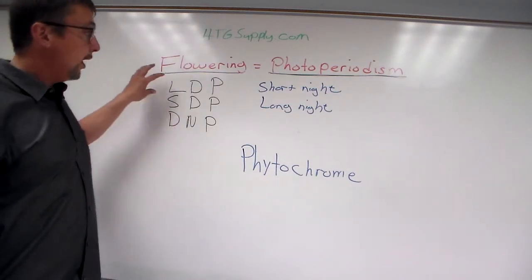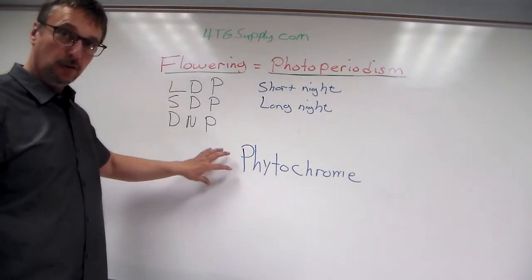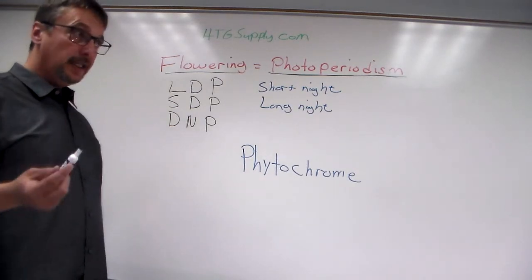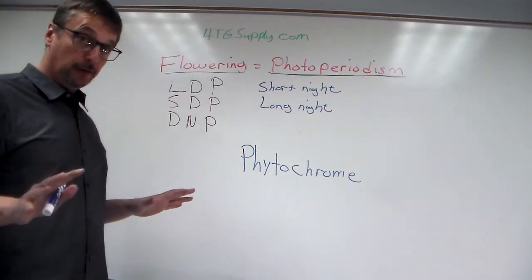Now when we talk about long day and short day plants, if we want to understand how this works, we have to understand a molecule called phytochrome. Now phytochrome is a protein and it's a pigment. It absorbs light energy. It has nothing to do with photosynthesis.